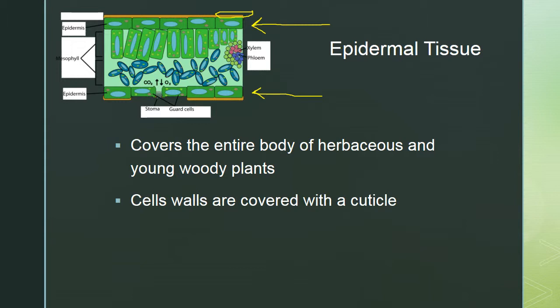One modification is guard cells on the bottom of a leaf. Their structure allows them to be very turgid or to release water. Depending on their turgidity, the opening between two guard cells — the stomata — either opens or closes, allowing for gas exchange and evaporation of water.